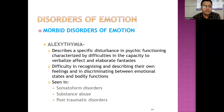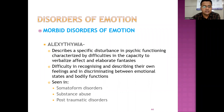Alexithymia describes a specific disturbance in psychic functioning characterized by difficulties in the capacity to verbalize affect and elaborate fantasies, difficulty in recognizing and describing one's own feelings, and in discriminating between emotional states and bodily functions. It is seen in somatoform disorders, substance abuse, and post-traumatic stress disorders.